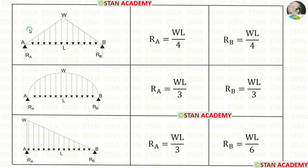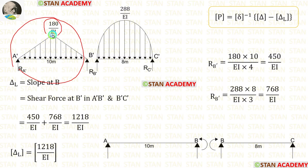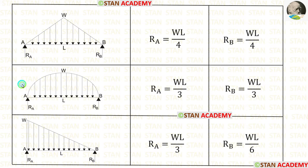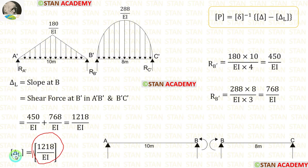Alternatively, we can calculate the reactions using formulas. If in a simply supported beam, UVL is acting in the shape of an isosceles triangle, the formula for reactions are WL/4 and WL/4. With W = 180/EI and L = 10 m, we get 450/EI. If UVL is acting in the shape of a parabola, the reactions are WL/3 and WL/3. With W = 288/EI and L = 8 m, we are getting the same value for the delta L matrix.